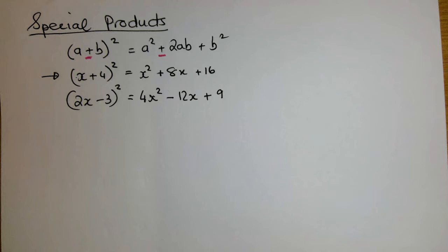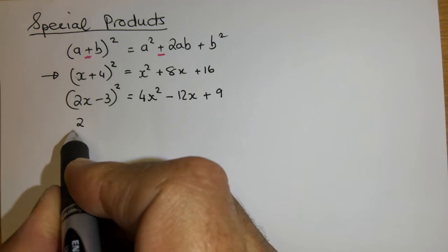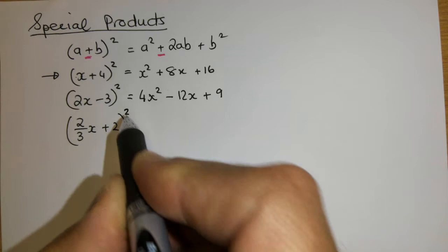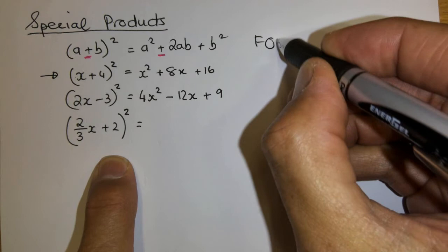Ok, let's step it up a little bit. Let us bring a fraction in. 2 over 3x plus 2 all squared. Now remember everything works the same. Everything is based on the form of this product.